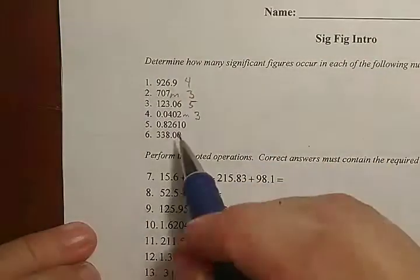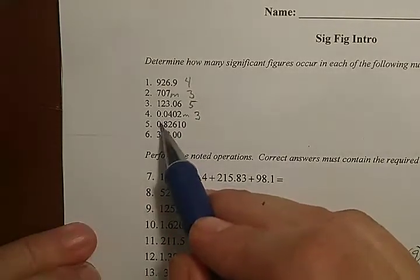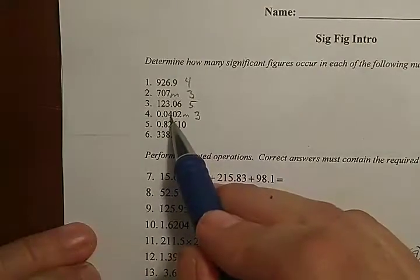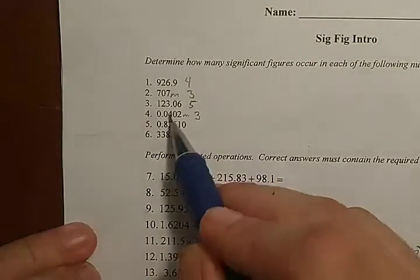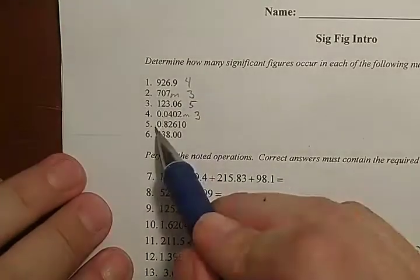So, here's one that combines both. We said a leading zero doesn't really measure. Zero point doesn't measure. And any zeros until you get to something else is not a measurement. So, this zero is not a measurement. So, let's cross that one out.